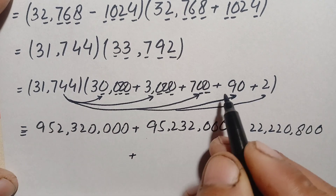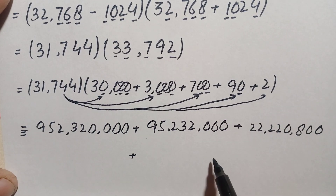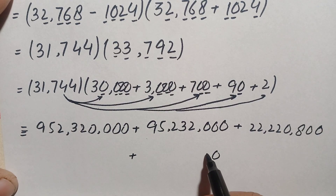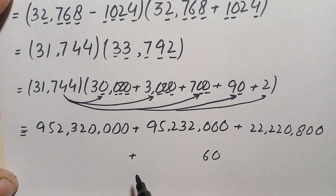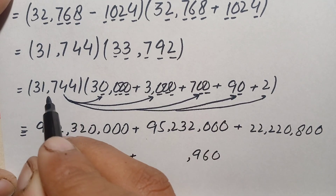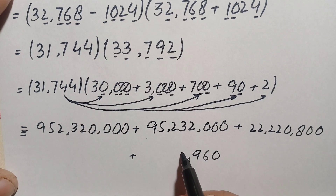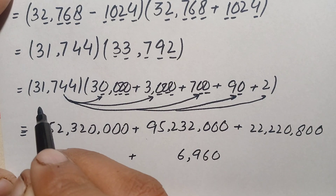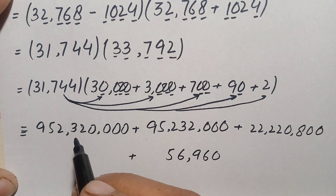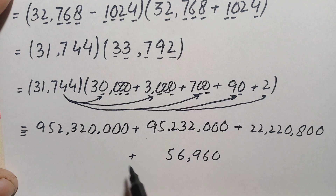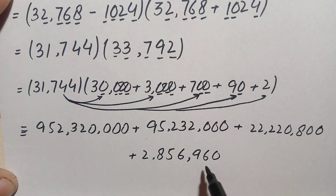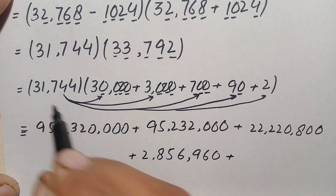Multiplying 31,744 by 90: 9 times 4 is 36, carry 3; 9 times 4 is 36 plus 3 is 39, carry 3; 9 times 7 is 63 plus 3 is 66, carry 6; 9 times 1 is 9 plus 6 is 15, carry 1; 9 times 3 is 27 plus 1 is 28. The product is 2,856,960.